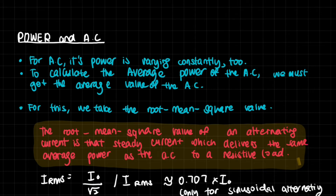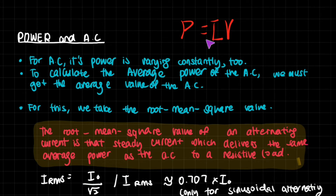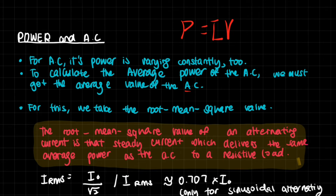To find average power we need average values of current and voltage, since P = IV. However, both the alternating current and alternating voltage keep changing. So we use the root mean square (RMS) value. The RMS of an alternating current is the steady direct current which delivers the same average power as the alternating current to a resistive load.